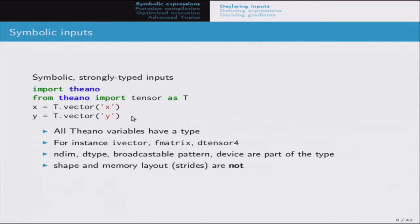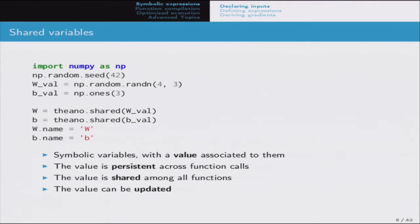X and Y are purely symbolic variables - we give them values later, but for now they're empty. There's another kind called shared variables: they're symbolic but also hold a value that is persistent across function calls and shared between different Theano functions. Shared variables are usually used for storing model parameters you want to learn. We can create two shared variables from values - one with two dimensions (a weight matrix) and one with one dimension (a bias). Variables can be named by assigning to the name attribute.